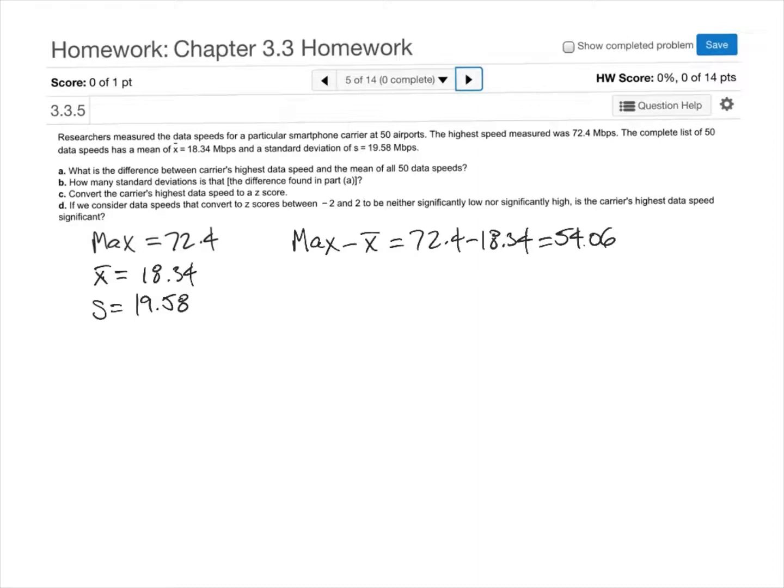Part B asks us how many standard deviations is that? In order to find out how many standard deviations 54.06 is, we would divide 54.06 by the standard deviation 19.58. This results in 2.76 if we round to two decimal places.